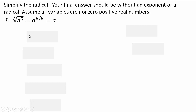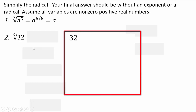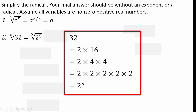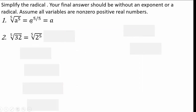What about fifth root of 32? We factor 32: 2 times 16, 16 is 4 times 4, 4 is 2 times 2 — so 32 is 2 to the 5th. Just like a to the 5th, we now have 2 to the 5th, so we end up with 2 to the power 5 over 5, which is 2.